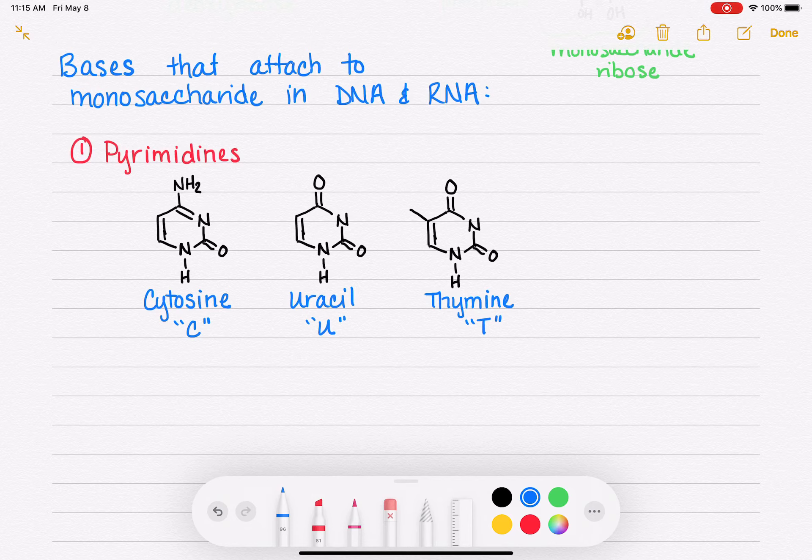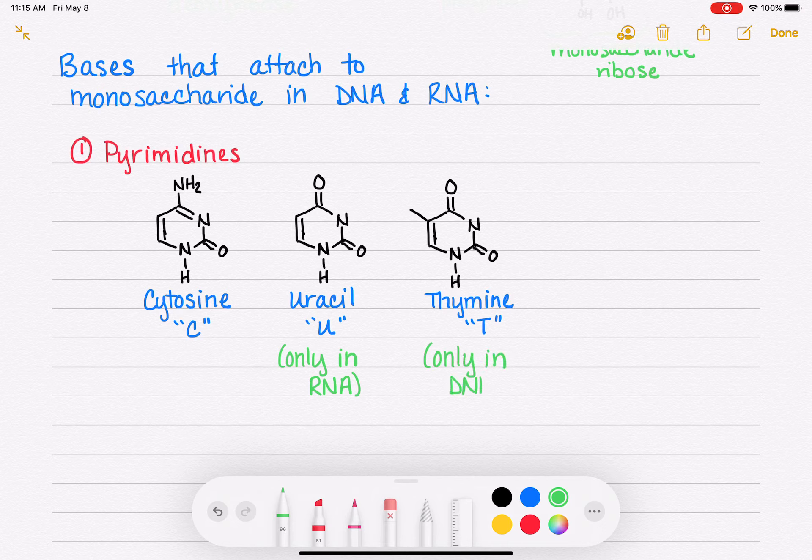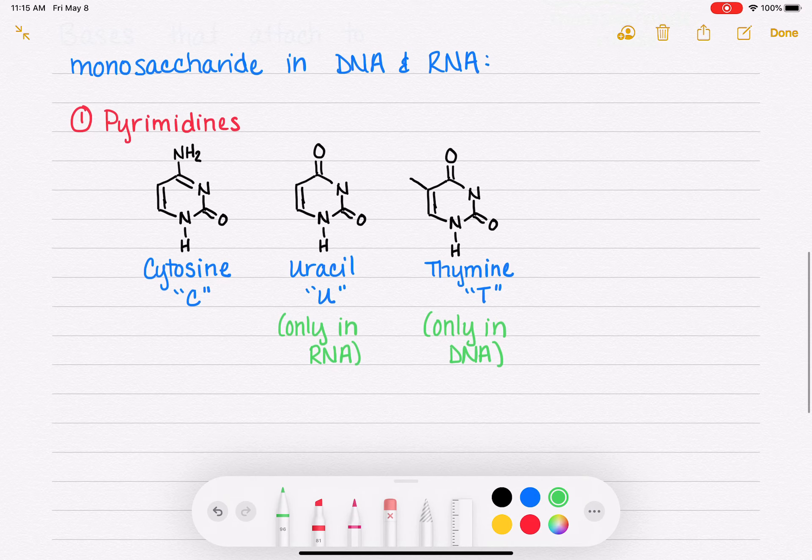And as you also, I'm sure you also know this, uracil is only found in RNA. And thymine is only found in DNA. But cytosine is in both of them.